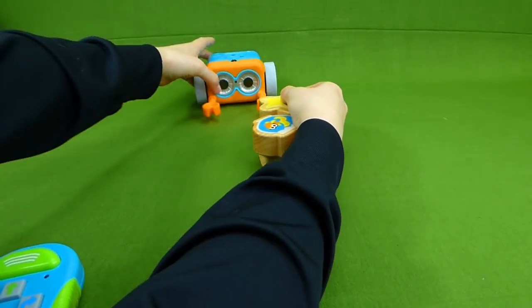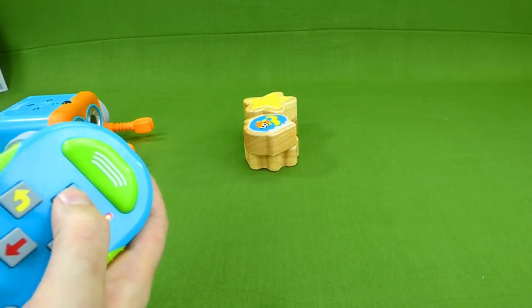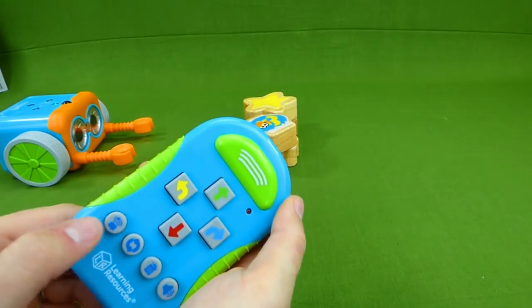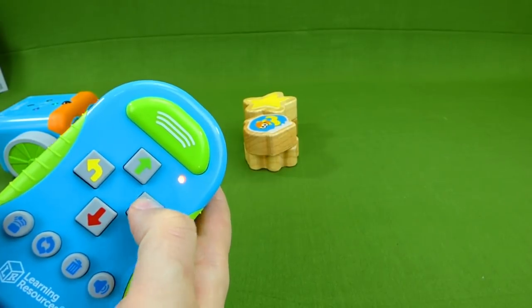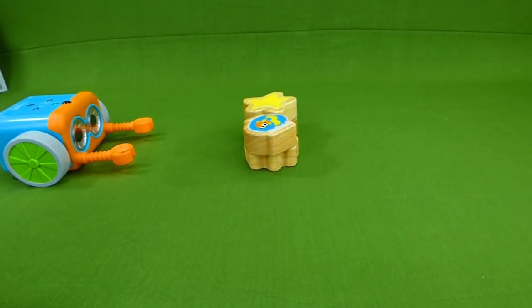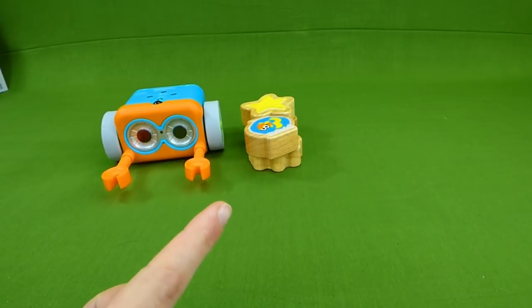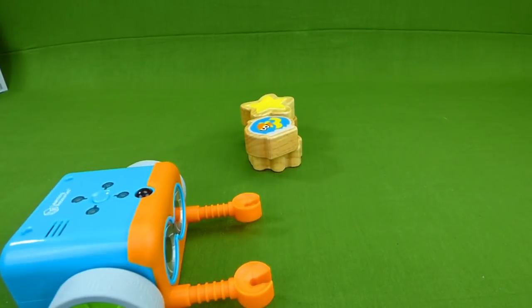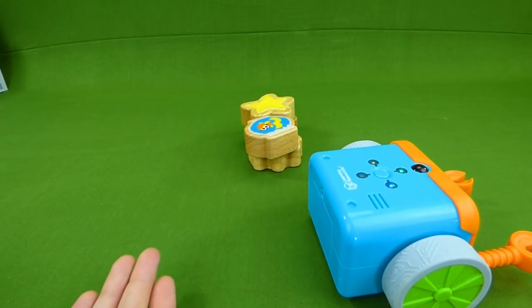And I'm going to give you a different view so you can see better what he does. Here we go. All right, Botley. We want you to go straight, straight. But if you run into something, I want you to go right, straight, left. Can you do that, Botley? We transmitted it. Ah, he knew he ran into something. So he went and followed my directions. Very cool, Botley.